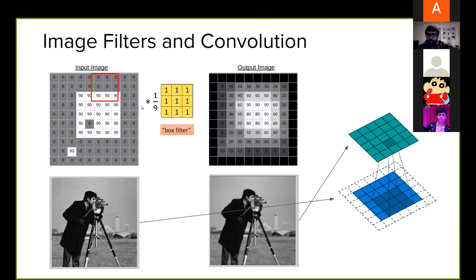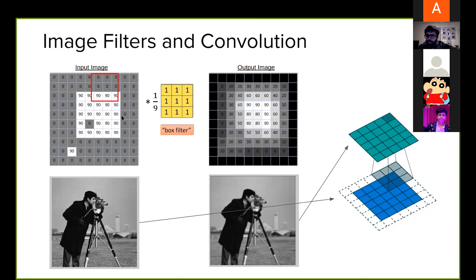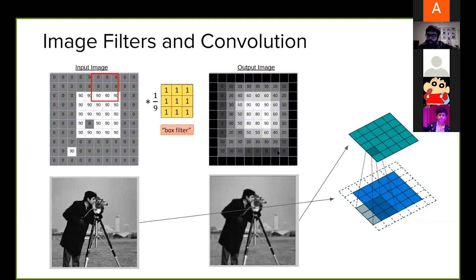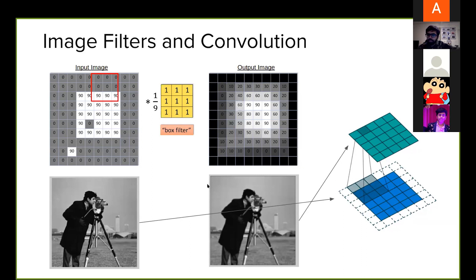I do this for all the patches in the image — I can shift this red box everywhere, up and down, left and right. Whatever numbers I get after multiplying with the same box filter, I replace their sum in the output image. The value of each pixel becomes an average of the pixels in its neighboring area — that's why the image blurs. The animation on the right shows how this filter is moved, the sum calculated, and replaced at the center.